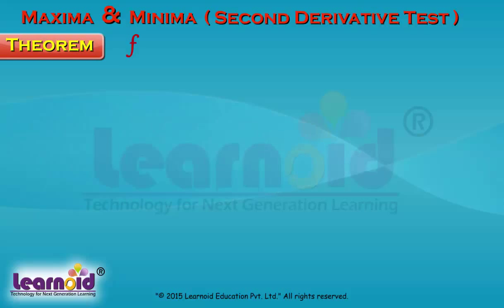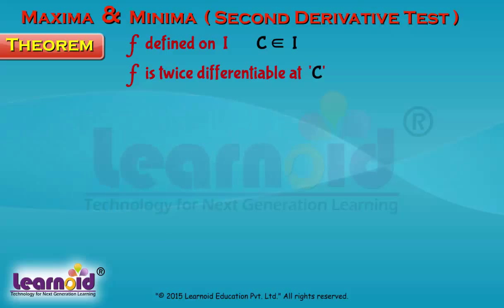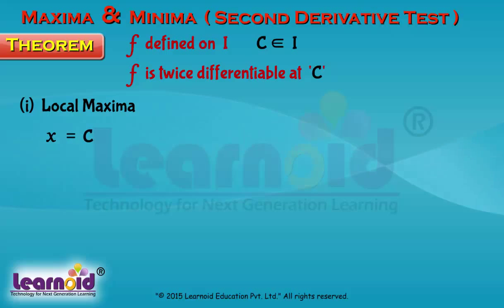Let f be a function defined in an interval I and c belongs to I. Let f be twice differentiable at c. Then x equals c is a point of local maxima if: